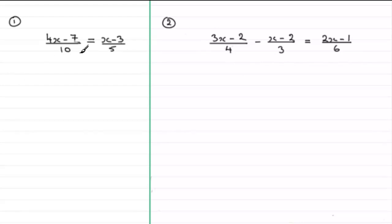Now to solve this first one, what we've got to do is find the lowest common multiple of 10 and 5. In other words, try and find a number that 10 and 5 go into, and preferably as small as possible. Well it's going to be 10. So what I'm going to do is multiply both sides of this equation by 10. So what we would therefore have is 10 multiplied by (4x minus 7) over 10 equals 10 times (x minus 3) over 5.